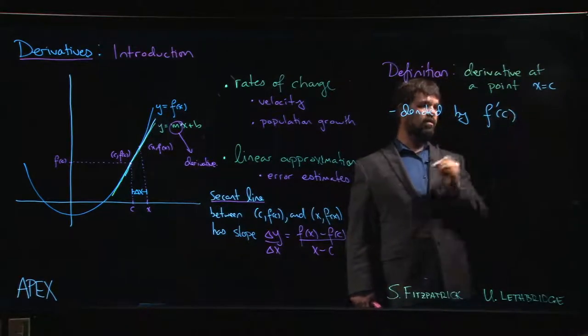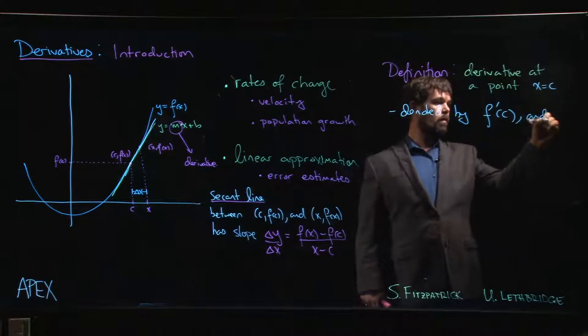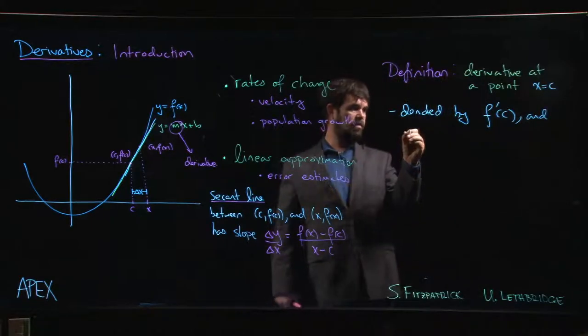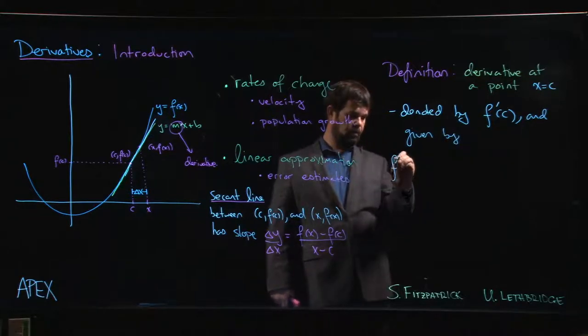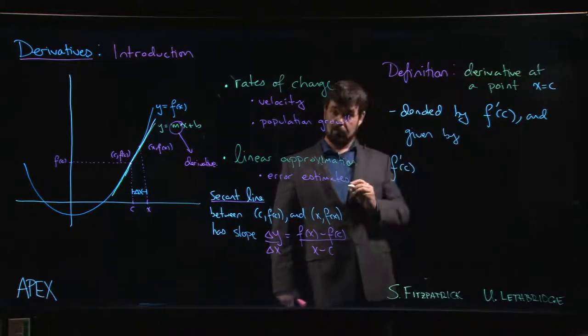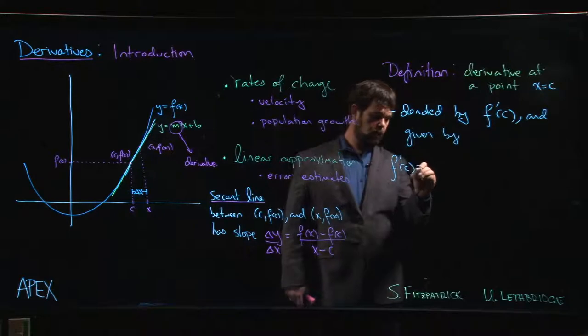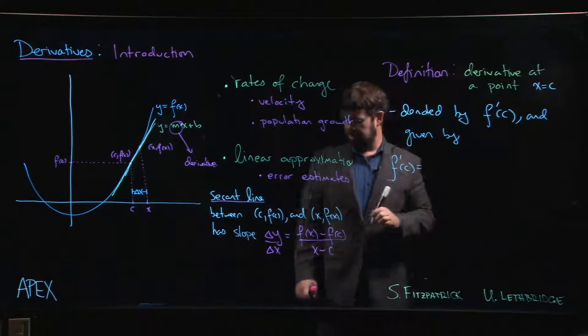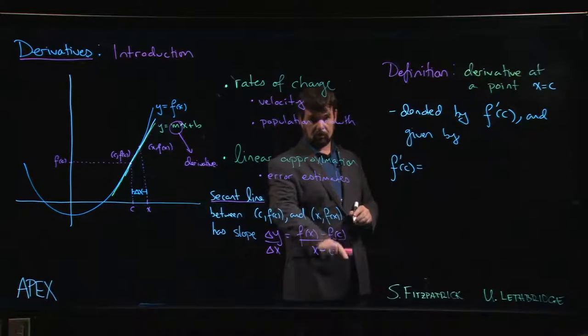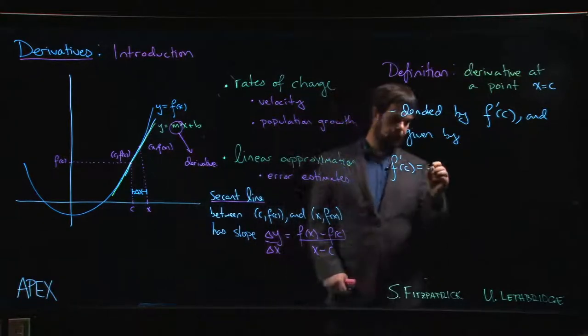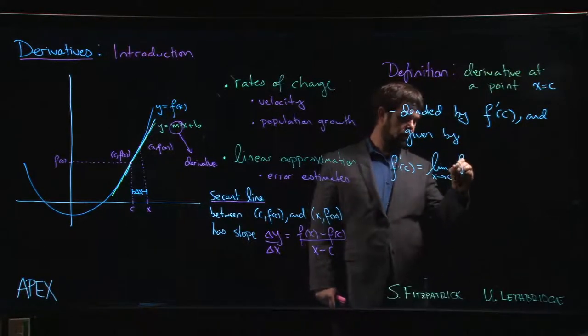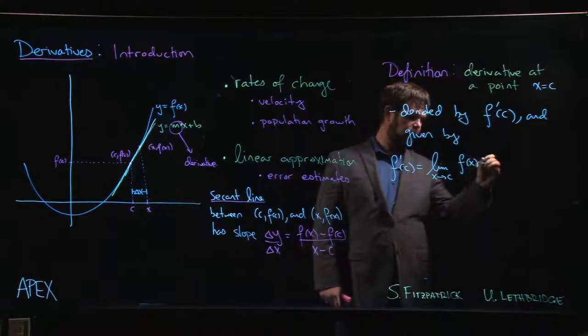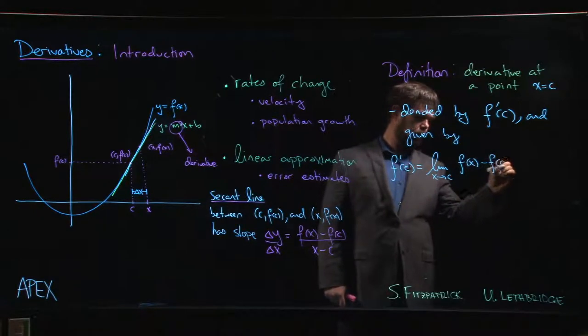And it's given by, so here's one way of writing down the formula: f prime of c, it's going to be defined as a limit. It's going to be defined as the limit as x approaches c of f(x) minus f(c) over x minus c.